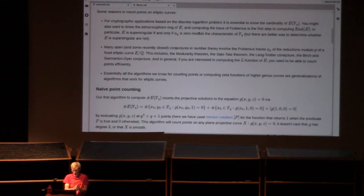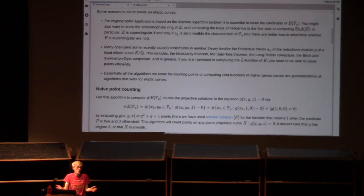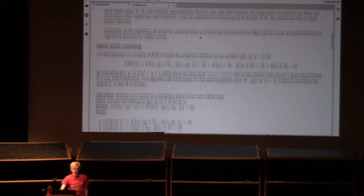If you stare at that equation for a moment, you realize that the fact that I had an elliptic curve on the left-hand side is completely irrelevant. The point counting mechanism works just fine for any plane curve, for any projective plane curve. It doesn't even need to be smooth and it doesn't need to have degree three. So we'll just write our algorithm generically, even though we plan to apply it to elliptic curves.